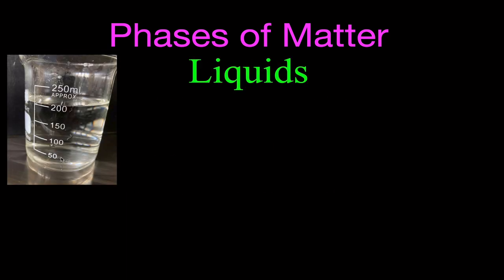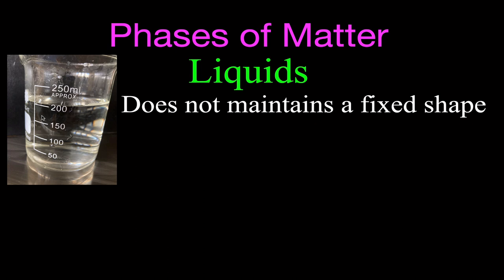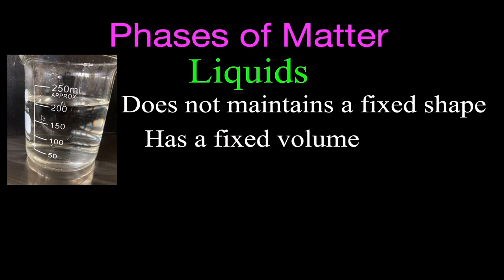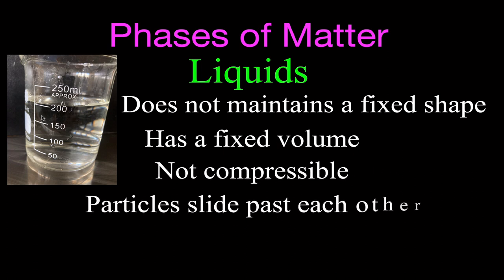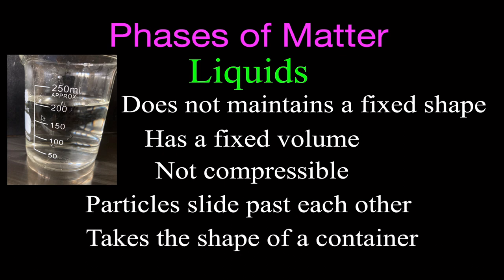What about a liquid? Here we have about 200 milliliters of liquid water. You can see it does not maintain a fixed shape — I can pour it into containers of different shapes and it will always take the shape of the container. But it does have a fixed volume; it's always going to be 200 milliliters of water. Liquids are not really compressible, and the particles are kind of sliding past each other — not fixed in a crystal structure — touching each other but moving past each other.